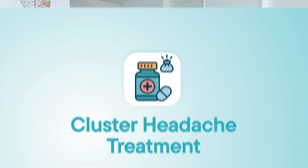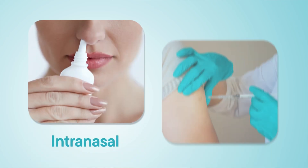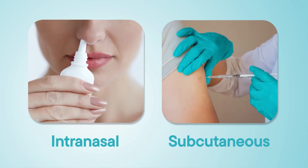The treatment for cluster headaches involves a rescue medication like a triptan — similar to the sumatriptan used in migraines, but in this case it tends to be more intranasal or subcutaneous for faster delivery. Because these headaches are very abrupt, quick-onset, and very severe, we don't have time to wait for oral medication to kick in.